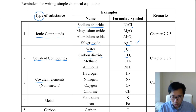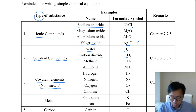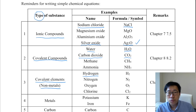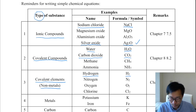For covalent elements — that means some non-metals — for hydrogen, be careful, you need to write the molecular formula. For example, H2 for hydrogen, O2 for oxygen.